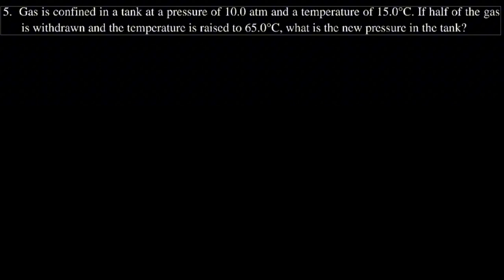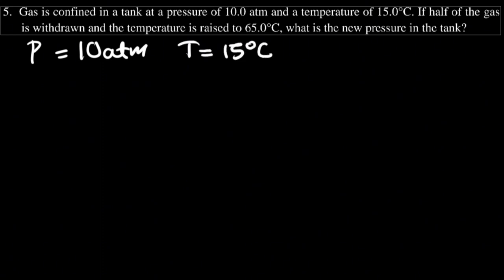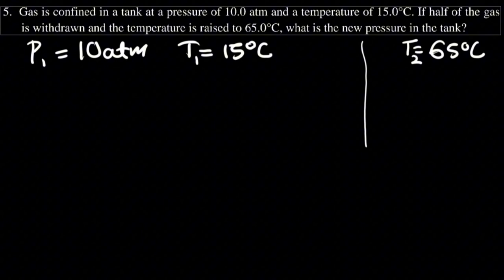This next question is a bit different. Gas is confined in a tank at a pressure of 10 atm and a temperature of 15 degrees Celsius. If half of the gas is withdrawn and the temperature is raised to 65 degrees Celsius, what is the new pressure in the tank? So we have P1 = 10 atm, T1 = 15°C, T2 = 65°C, and we want P2.